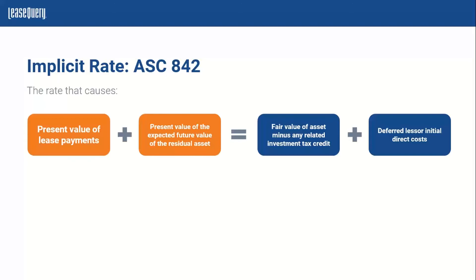To consider that implicit rate, whether as the lessor or if the lessee was able to figure it out, they would need specific inputs. You're looking at the present value of the lease payments — they would figure out the lease payments and use that rate to present value them. These lease payments used for the implicit rate typically would exclude most variable payments. So for leases with multiple components and variable consideration, this implicit interest rate does not always represent the expected entire return for the lessor.